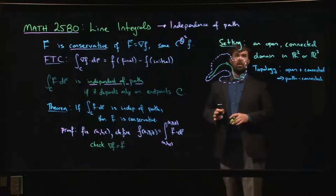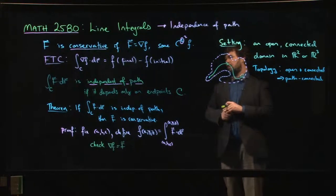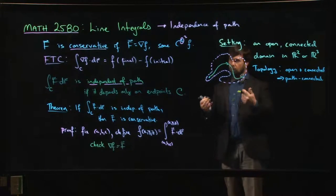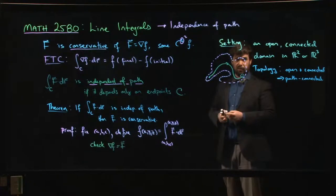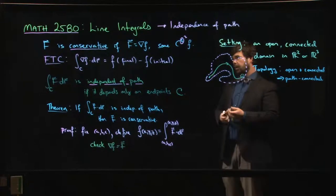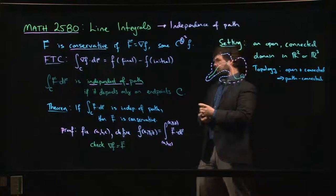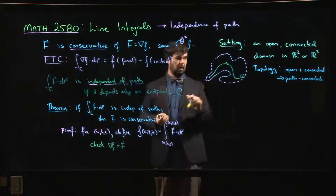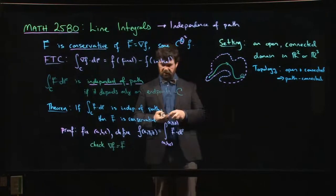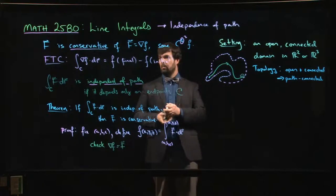Conservative and independent of path are more or less just two aspects of the same thing — that's the moral of the story. Another important context we haven't discussed yet is that of closed curves.